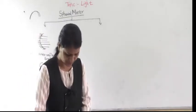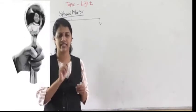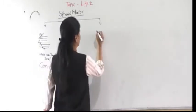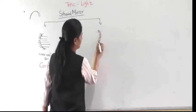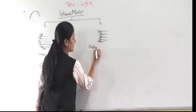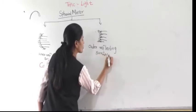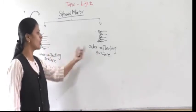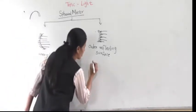Now see — the outer part is also a reflecting part. If you look at the spoon from the outside, you can also get your image. This outer reflecting surface is also a part of the spherical mirror. When the outer part is the reflecting surface, that type of mirror is called a convex mirror.